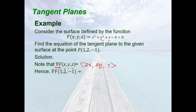Hence, the gradient of f at the point (1, 2, −1) equals the vector (2·1, 2·2, 1), which is equal to the vector (2, 4, 1).